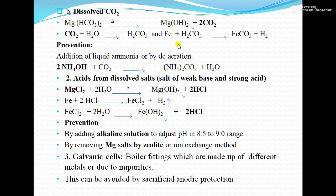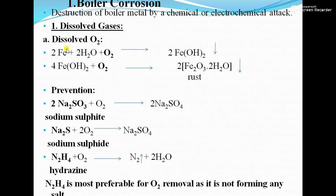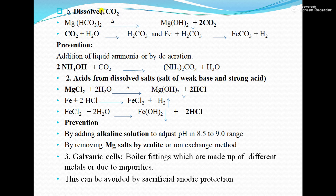To prevent corrosion due to CO₂ and temporary hardness, we add liquid ammonia or use de-aeration. Adding ammonium hydroxide converts the CO₂ present in the water into ammonium carbonate, and in that way corrosion is reduced.